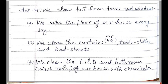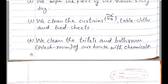Number four: We clean the toilets and bathrooms of our house with chemicals — हम washroom और toilets को साफ करने के लिए phenyl और अन्य chemicals use करते हैं. If you have more points, you can add them. इसके आगे आप जोड़ सकते हैं, जो भी आपको points पता हैं, five, six, seven — number of points you can add.